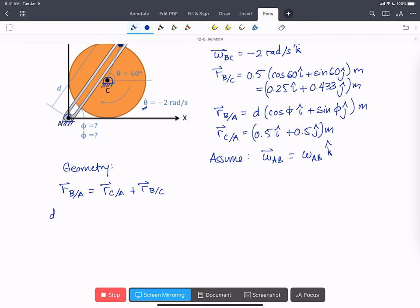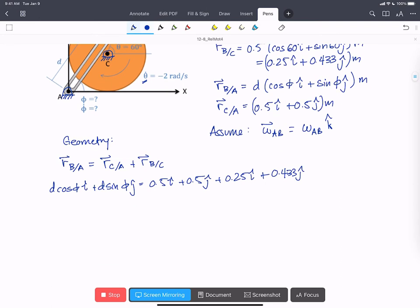And so we can, we have expressions for all of those. So we can just write them out. So that's D cos phi i-hat plus D sine phi j-hat equals 0.5 i-hat plus 0.5 j-hat plus 0.25 i-hat plus 0.433 j-hat. And so that gives us, if we split it into components,